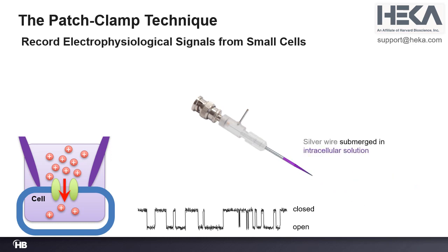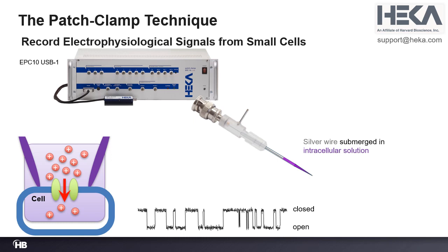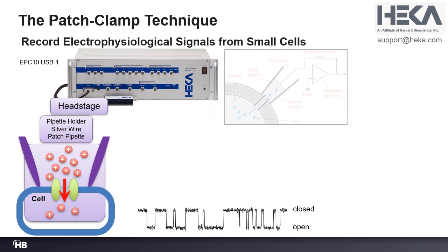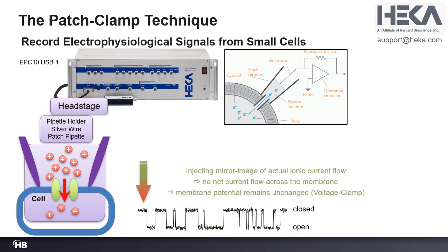You plug this in and the silver wire is submerged into the intracellular solution. You have an EPC-10 USB amplifier, which has a head stage, and the pipette holder is attached to the head stage. The signal can travel from the cell where it is recorded, through the solution, into the silver wire, and into the head stage. Inside the head stage there is a feedback mechanism — it measures the signal at the tip of the pipette and almost instantaneously sends back into the tip a mirror image of the measured signal.